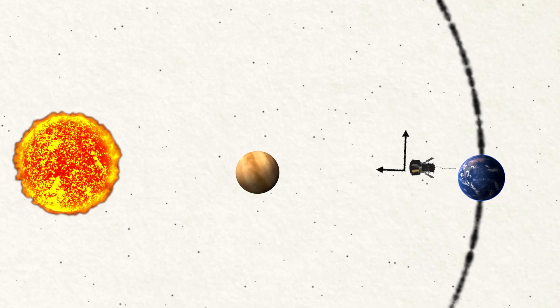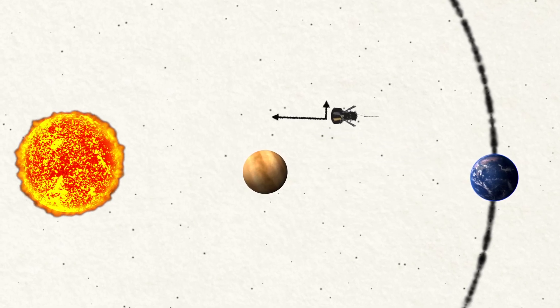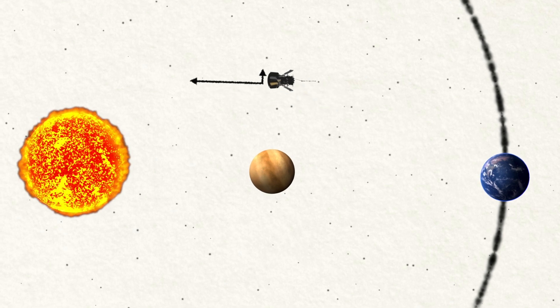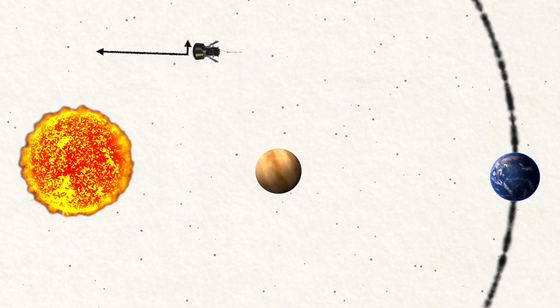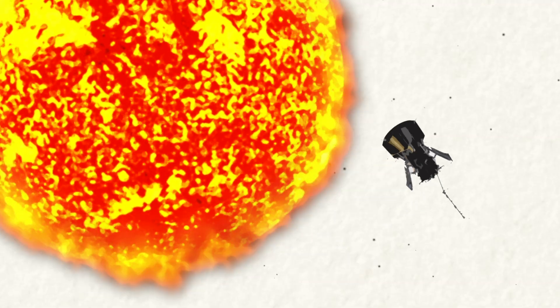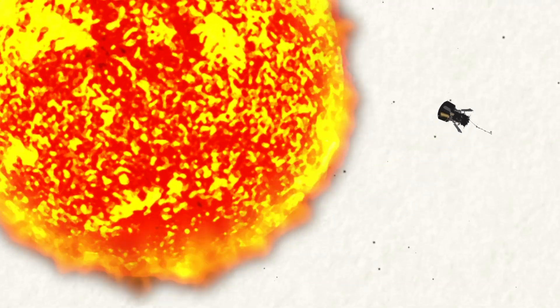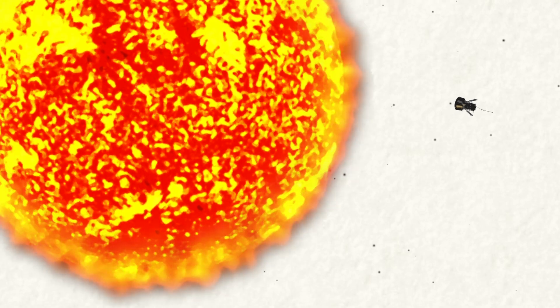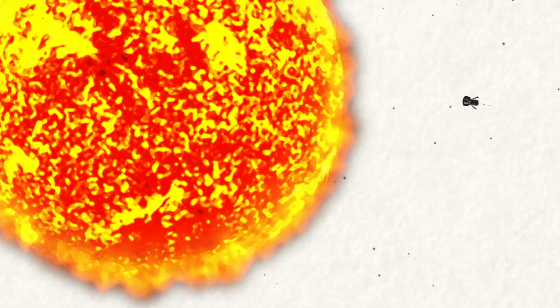When it finally does make its closest approach to the Sun, Parker Solar Probe will have lost much of its sideways speed, but gained a great deal of overall speed thanks to the Sun's gravity. Parker Solar Probe will hurtle past the Sun at 430,000 miles an hour, the very first human-made object to get that close.